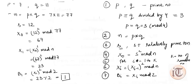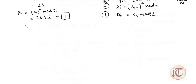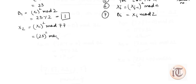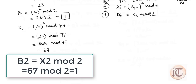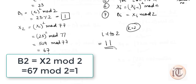Now calculating one more value, B₂: first we compute X₂ equals X₁ squared mod 77. X₁ is 23, so 23 squared is 529, and 529 mod 77 equals 67. Then B₂ equals X₂ mod 2, which is 67 mod 2, and it comes out to be 1. So for a loop from i equals 1 to 2 (K equals 2), the sequence of bits is 1, 1. This is how we use the BBS algorithm to generate pseudo random numbers in terms of bits.